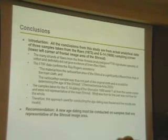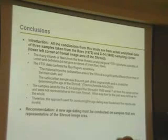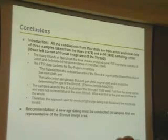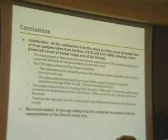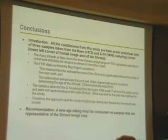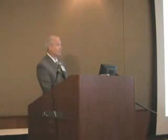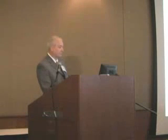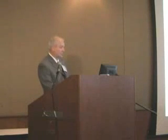The samples taken for the carbon-14 dating of the shroud in 1988 were all taken from the same corner and were not representative of the main shroud. What was true for the part was not true for the whole, and that's one of the basic rules in doing analytical chemistry: if you have a sample that you're going to analyze, that sample must be representative of the whole — especially if this sample is to characterize an area or a population, the sample must be representative of the whole, and they did not do this. Therefore, the approach used for conducting the age dating was flawed, and the results are therefore invalid.